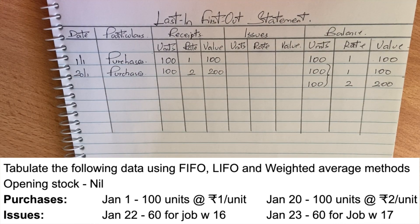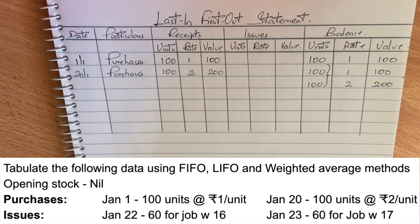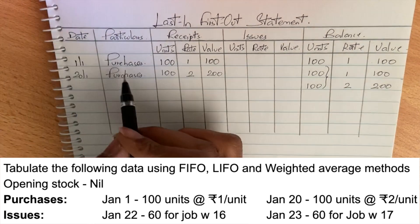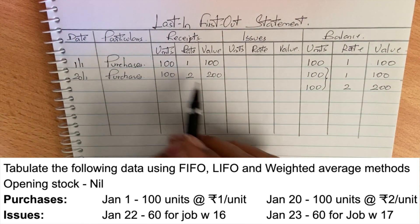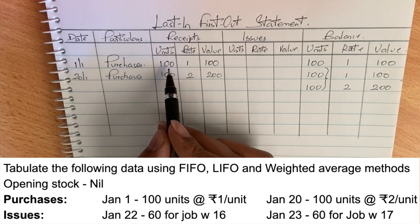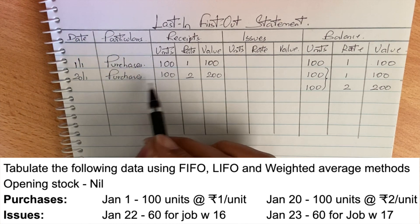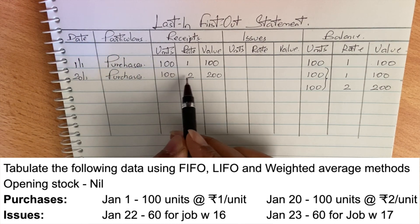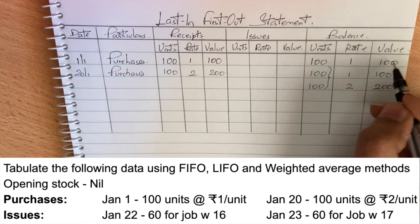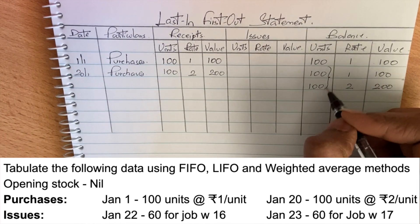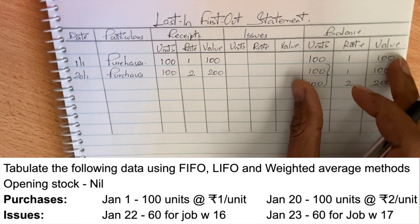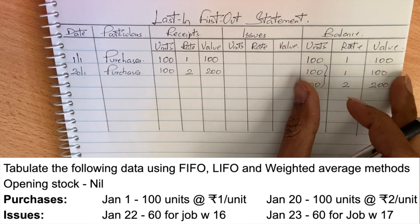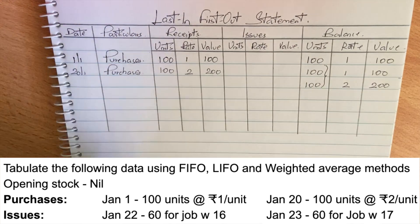Now for the last-in-first-out method. The table structure and purchases are the same. First purchase is 100 units at 1 = 100. Second purchase on January 20th is 100 units at 2 = 200. The balance after purchases is the same as FIFO — 100 at 1 and 100 at 2. However, the issues will differ under LIFO.